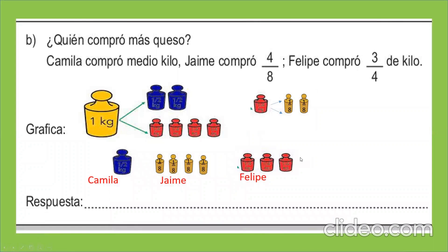Siguiente. Nos dice: ¿quién compró más queso? Camila compró medio kilo, es decir, un medio. Jaime compró cuatro octavos. Y Felipe compró tres cuartos.